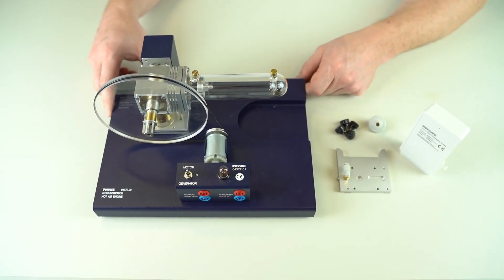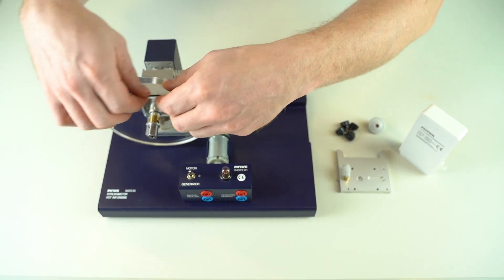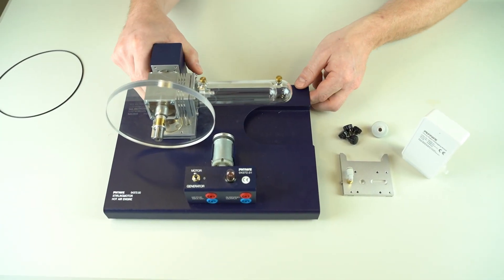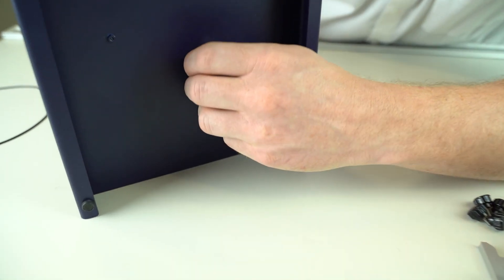In order to get started and to mount the new module we first remove the O-ring and unmount the base plate from the old module by unscrewing it from the bottom.